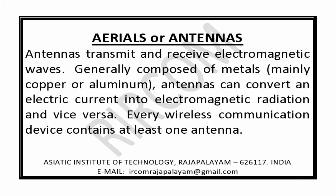Antennas transmit and receive electromagnetic waves, generally composed of metals, mainly copper or aluminium. Antennas can convert an electric current into electromagnetic radiation and vice versa.